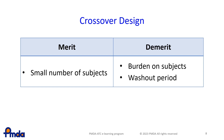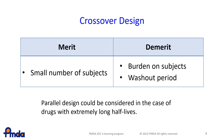In addition, a washout period is needed. Washout periods are used in crossover studies between the administration of test and reference products, and they should usually be more than five times the elimination half-life of the substance to be measured. Therefore, in the case of drugs with extremely long half-lives, a parallel design could be considered.